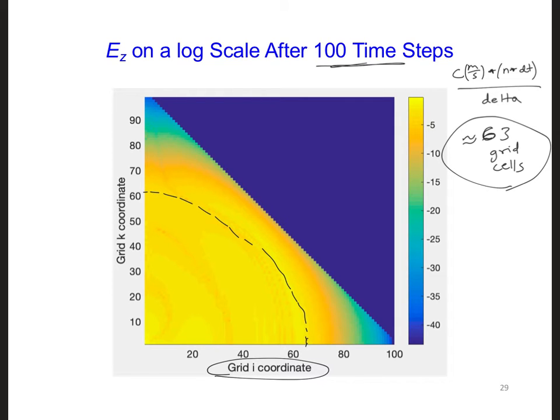So the fastest our wave could have propagated is the speed of light, and it would have reached 63 grid cells by the time the simulation is done. Of course, our source also ramps up from zero since it's a sinusoid. So there should also be a slight delay for the ramping up of our source.